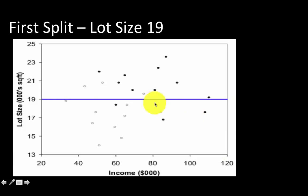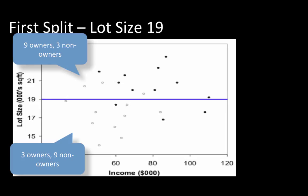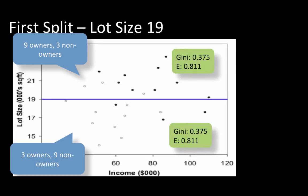After the first split at lot size 19, one region has 9 owners and 3 non-owners, and the other has 9 non-owners and 3 owners. Since both regions have the same 9:3 ratio, the p_k probability values are the same for both. The resulting Gini index is 0.375 and entropy is 0.811 for each region — an improvement over the original Gini of 0.5 and entropy of 1.